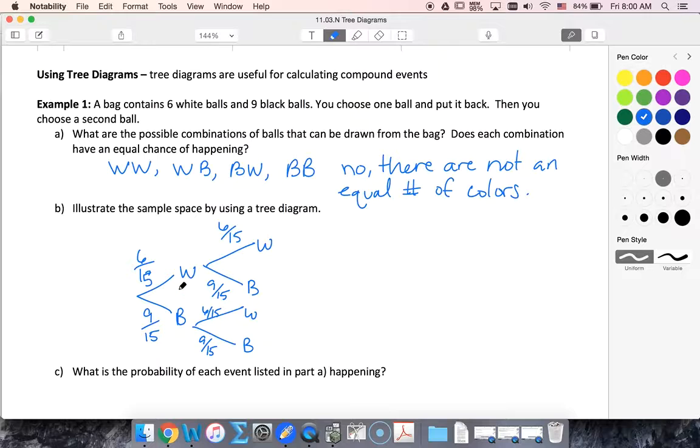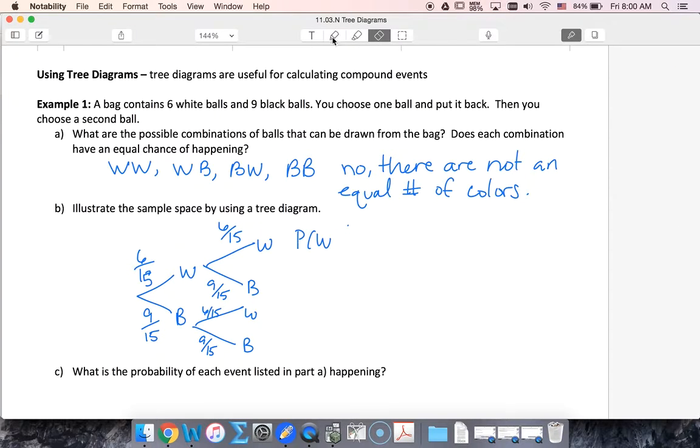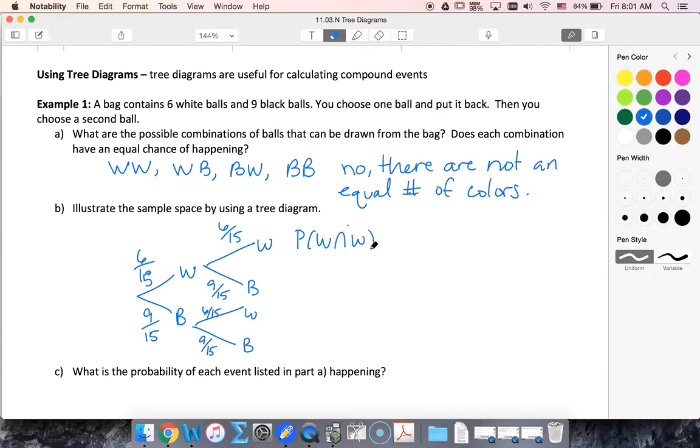So now the way that I can think about probability of getting white and white, I know these are independent events so I multiply those probabilities. So white and white is six out of fifteen times six out of fifteen, thirty-six out of two twenty-five.